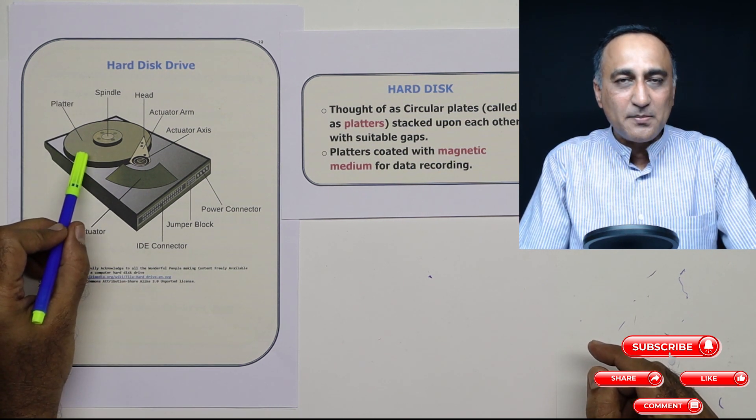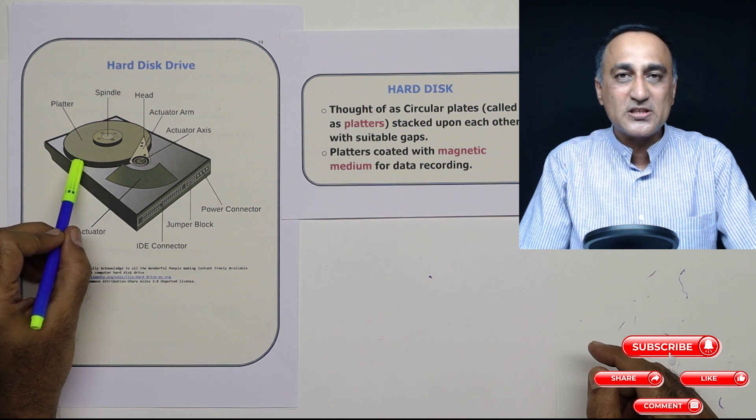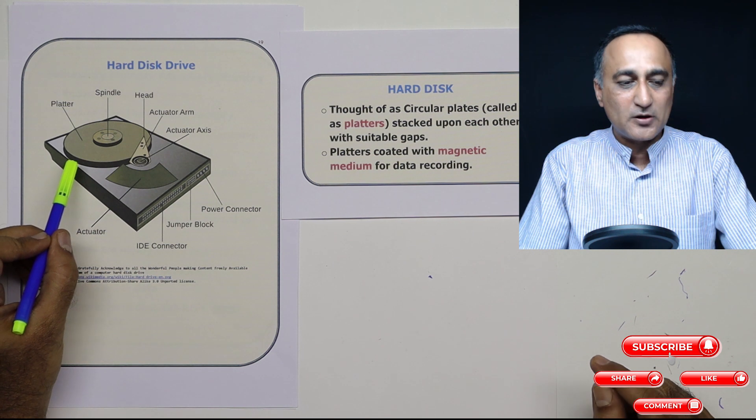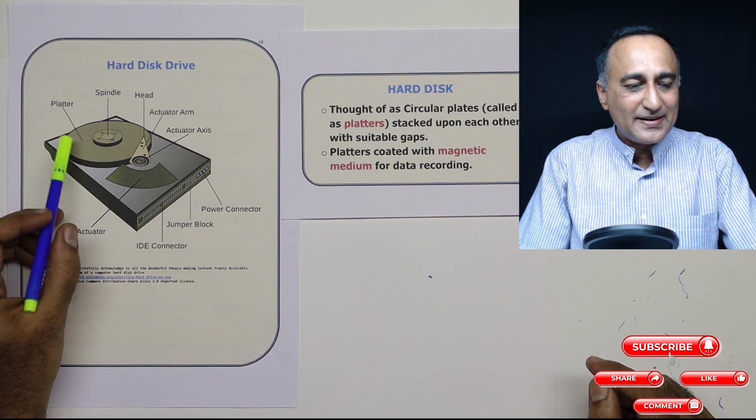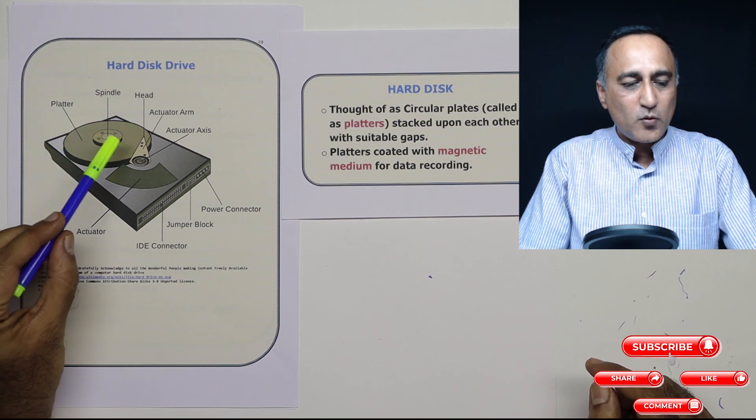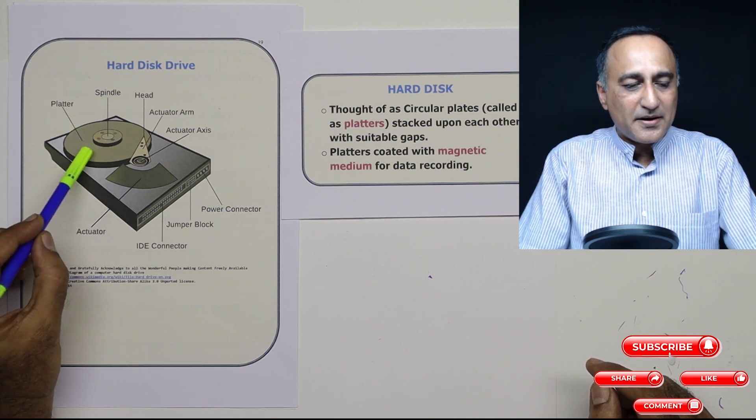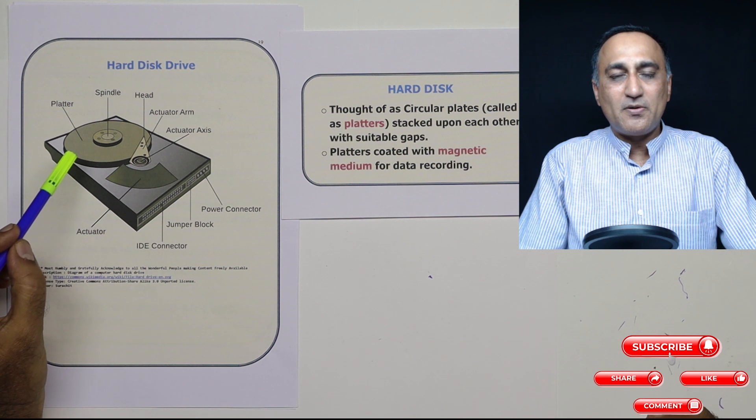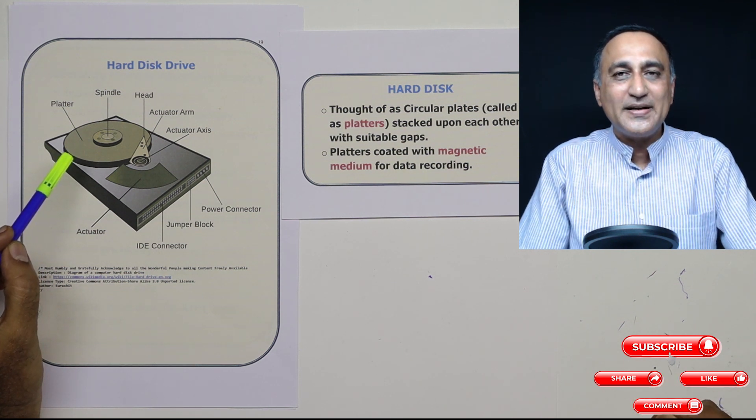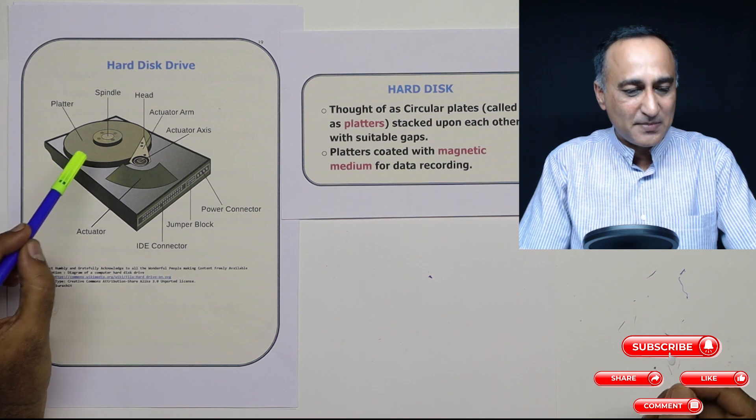So every plate is coated with magnetic media at the top and bottom. This plate in technical terms is known as a platter. The platter material is either made up of aluminum or it is made up of thin, high quality glass or plastic material.